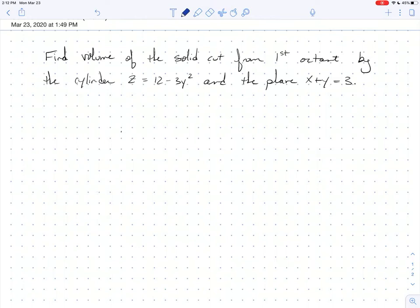So we want to find the volume of the solid cut from the first octant by this particular cylinder z = 12 - 3y² and the plane x + y = 3. We've got a cylinder right here, and then we have this plane, and together with the first octant, these shapes are going to form some sort of solid. So let's begin by sketching a picture. I'm going to draw my coordinate axes. Here we go, and I'm going to want my y-axis to be positive and negative. So this is y, this is x, and this is z.